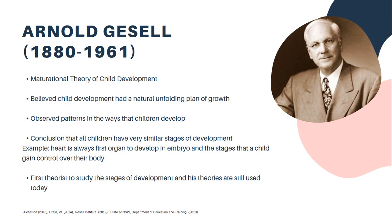Gesell developed the maturation theory of child development. He believed that child development is directed from within by the actions of genes. For example, when a child first gains control of their body, the order is always the same — it begins with their lips and tongues, followed by their neck, arms, and then trunks and legs. Gesell observed patterns in the ways that children develop, which showed that all children have very similar stages of development, but each child moves through these stages at their own rate. Aspects of his theories can be used today by identifying a list of normative behaviour for children at a specific age.